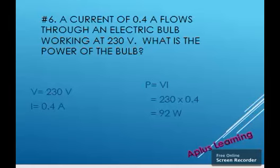but the given data is the potential difference and the current. Potential difference is 230 volt and current is 0.4 Ampere. We can apply P is equal to VI. That is power is equal to potential difference multiplied by current. That is 230 multiplied by 0.4. We have 92 watts.